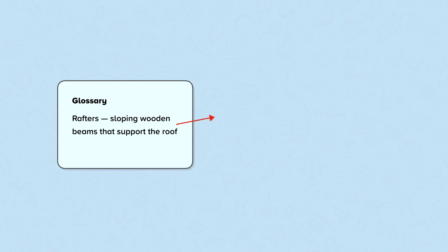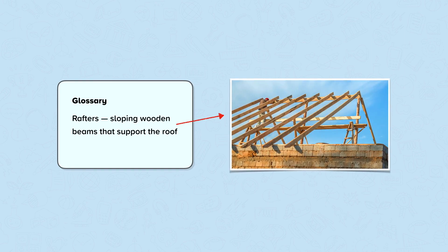Before we read the example of an autobiography, let's read the glossary first. A glossary will explain some of the more sophisticated language in the text. This glossary tells us that rafters are the sloping wooden beams that support the roof, and that a rabble is a noisy crowd.